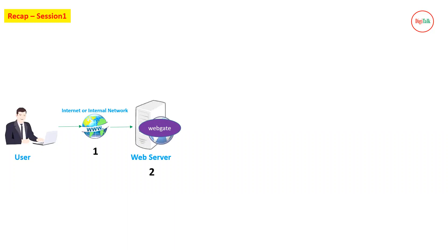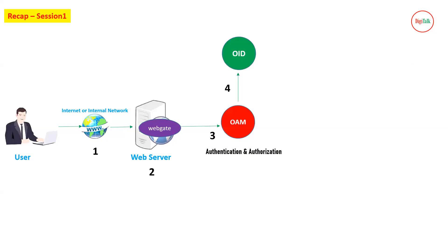When we integrate our OHS with OAM, we need a WebGate. The WebGate sits on the same server as your OHS, or possibly on a different web server. From WebGate, the request is forwarded to OAM for authentication and authorization — authentication meaning your username and password, and authorization meaning whether you are permitted to access the application.